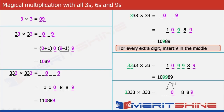Now we will increase 0 by 1 and put 1 in the first blank to the left of 0. And we will put another 1 by increasing 0 and putting it in the second blank to the left of 0. Now for the extra 3, we will put a 9 in the middle.